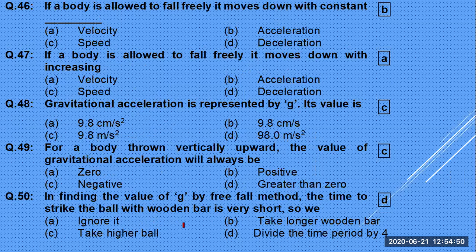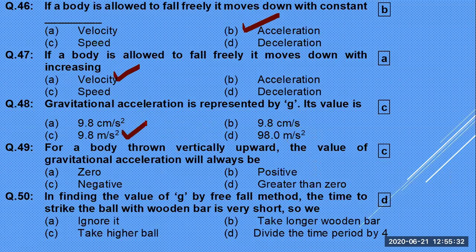If a body is allowed to fall freely, it moves down with increasing velocity. The velocity starts from zero at the point it is dropped and keeps increasing, becoming maximum just before hitting the ground. Gravitational acceleration is represented by g, with a value of 9.8 m/s², approximately 10 m/s².